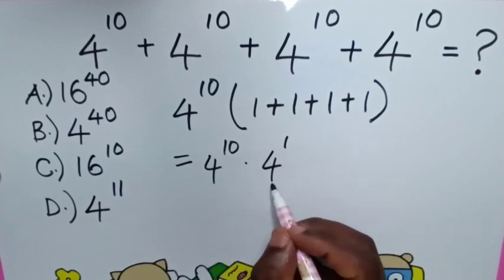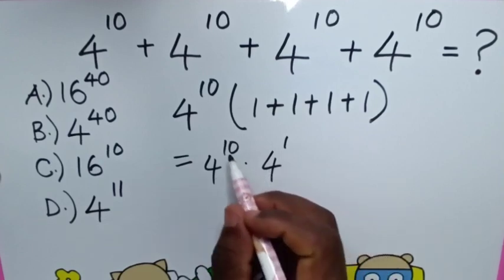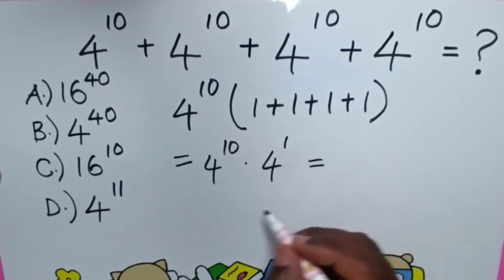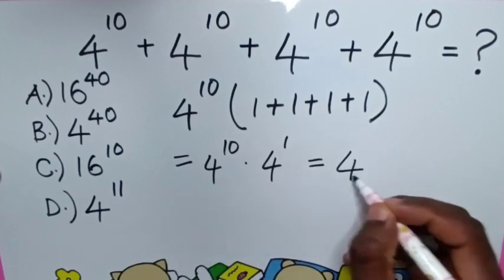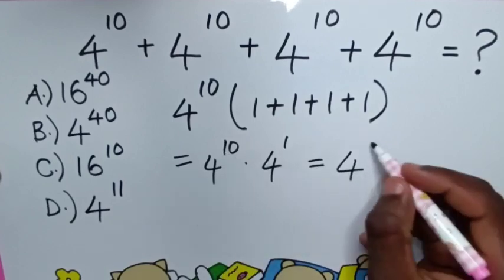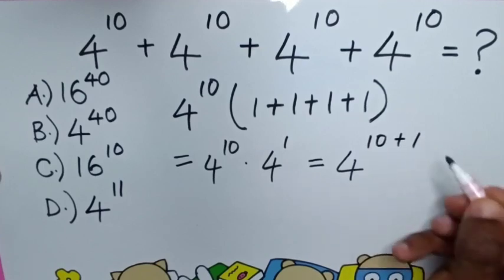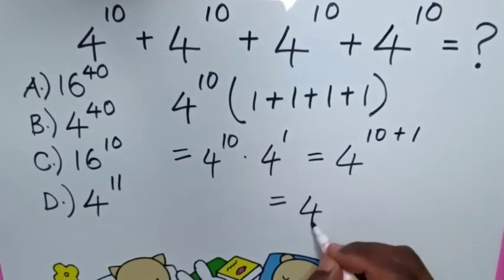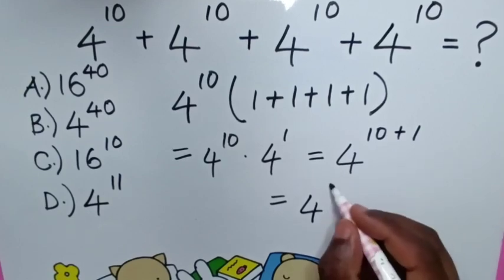Then in here is multiplication of exponents with the same base but different powers. So it will be equal to base of 4 power of 10 plus 1. Then it will be equal to 4 power of 11.